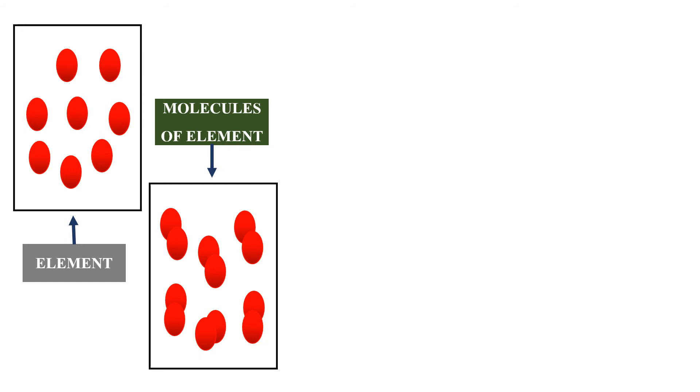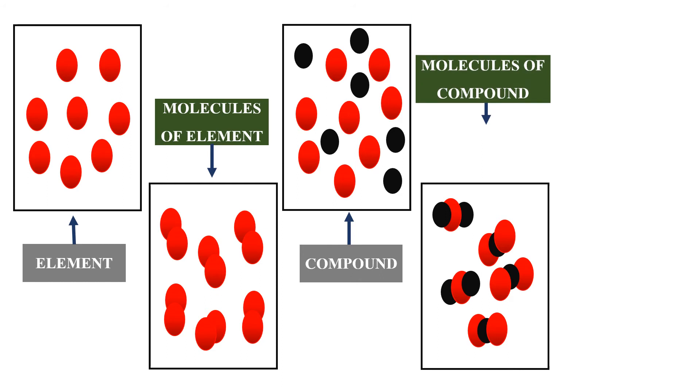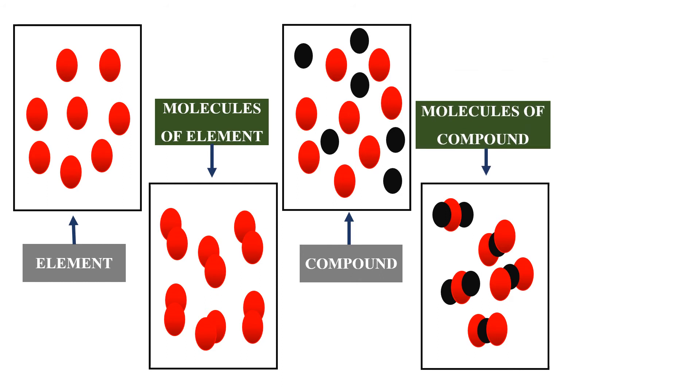Next, these are the atoms of black elements combined with the atoms of red element. So in this box, we have a compound. Then again, when the atom of black element is attached to the atom of red element, they will become compound. So these are the molecules of compound.